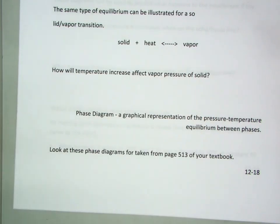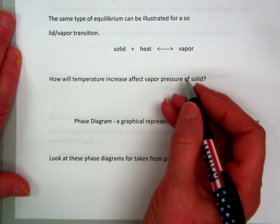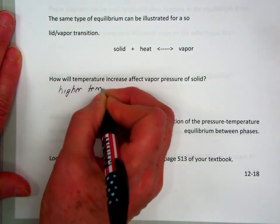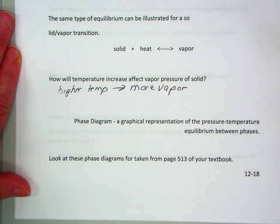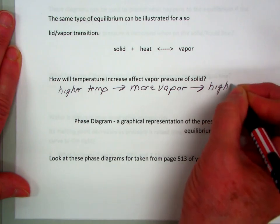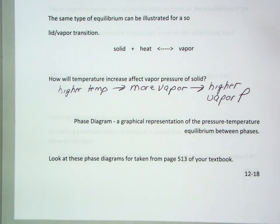So, think about this now, and how the temperature affects the vapor pressure of a solid. If I have a solid plus heat is in equilibrium with vapor, what happens if I crank up the temperature? I'll get more vapor, right? So, at a higher temperature, I get more vapor, and if I get more vapor, what does that do to the vapor pressure? Makes it higher. So, I get a higher vapor pressure. And remember, if I have higher intermolecular forces, what kind of vapor pressure do I get? Higher or lower? Lower. Because the more the molecules are hanging on to each other, the less vapor you make, right?